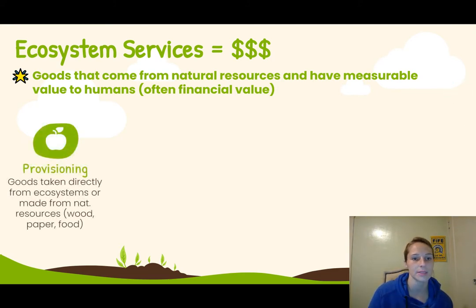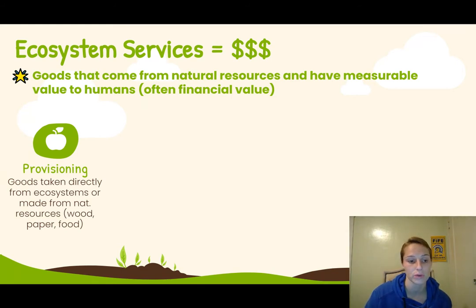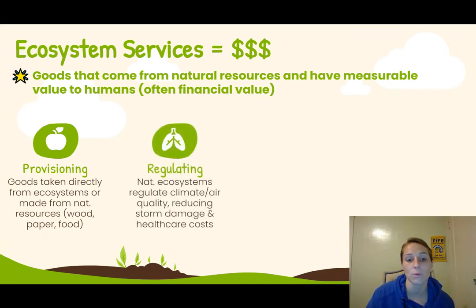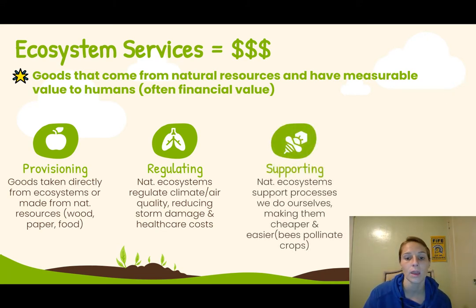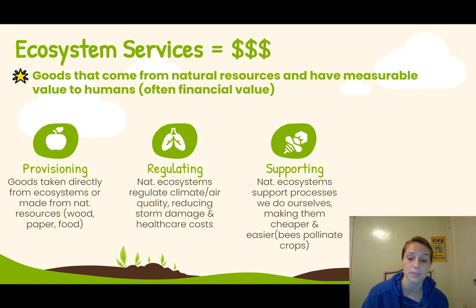There are four different types of ecosystem services. The first is provisioning — goods that are taken directly from ecosystems or made from natural resources, such as wood, paper, and food. The next type is regulating, where natural ecosystems regulate our climate or air quality, which reduces storm damage and healthcare costs. Another type is supporting services, where natural ecosystems support processes that we do ourselves, making them cheaper and easier — for example, how bees pollinate our crops.